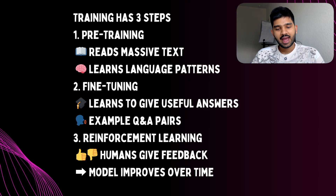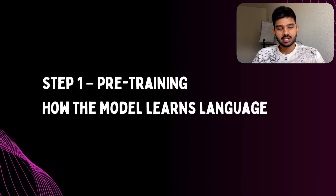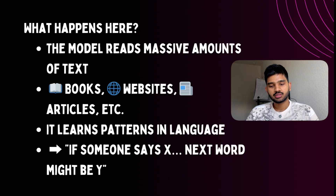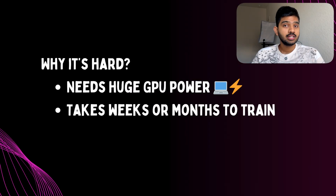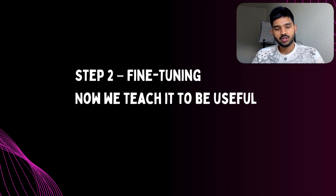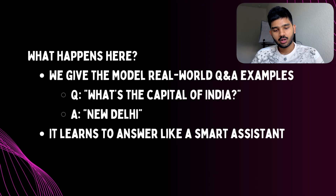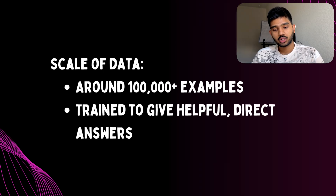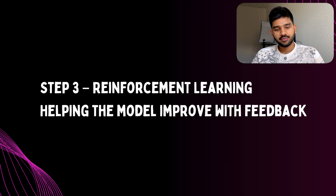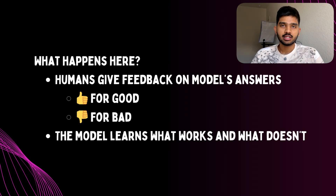Now let's look at the steps to train the model. There are three main steps: pre-training, fine-tuning, and reinforcement learning. Pre-training is where the model learns the language — it reads massive amounts of text like books, articles, and websites, and figures out patterns, like if someone says X, the next word might be Y. This step needs a ton of GPU power and time. The second step is fine-tuning, where we teach the model how to behave like a helpful assistant. We give it around a hundred thousand examples, like 'What's the capital of India?' — answer: 'New Delhi.' This helps the model give useful answers rather than random guesses.